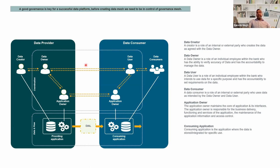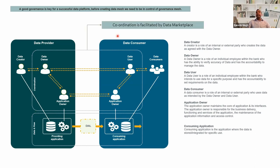If a data consumer wants to consume the data, they go to the marketplace and make a request: 'I want to use this data.' The data owner basically gives a yes or no on whether they can use it. If allowed at a higher level, the application owners of sourcing and consuming applications exchange information. This whole process is governed by the data marketplace. Once that is done, our DIAL platform enables the provider to send data to the consumer.